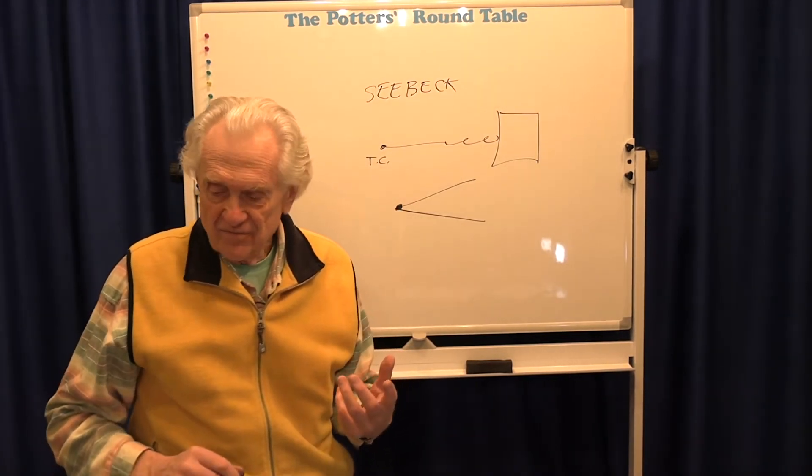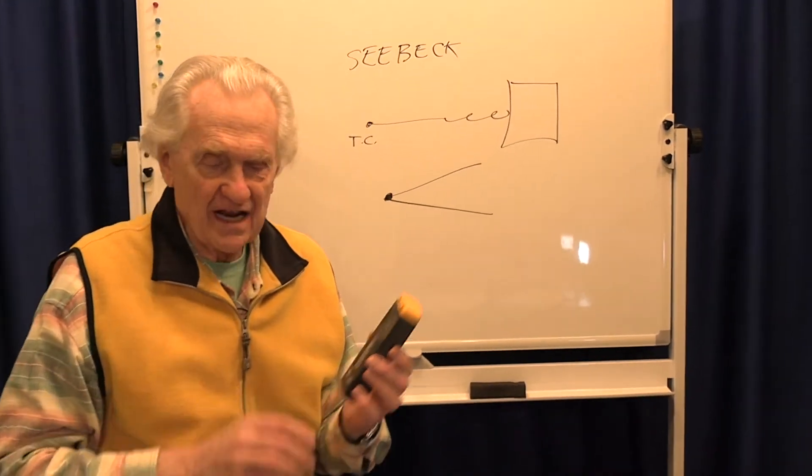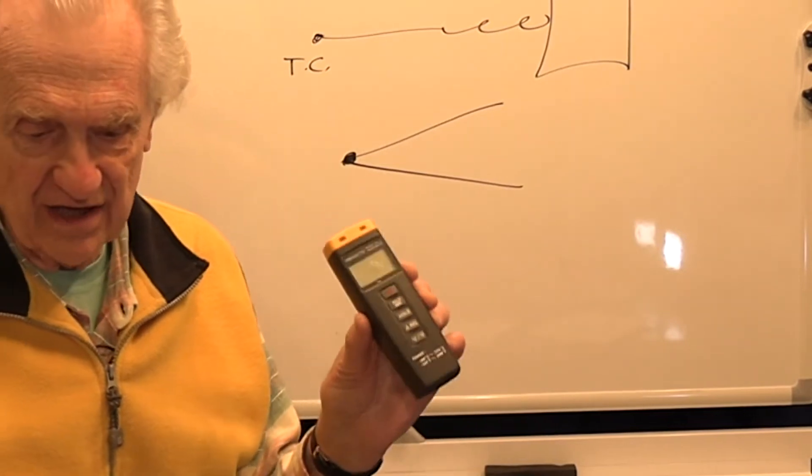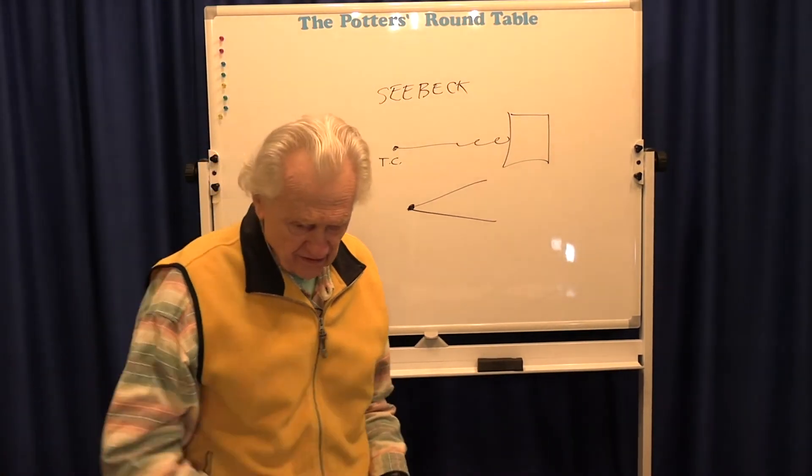More recently, instead of going to an analog meter like this, you can get a digital readout, something like this, where you just hook up the thermocouple to this and you read out the temperature directly on the readout.